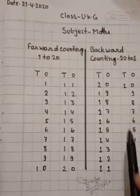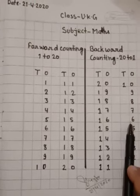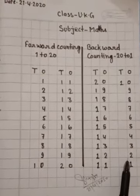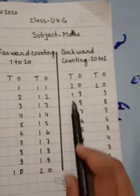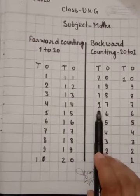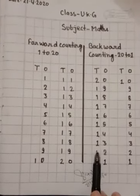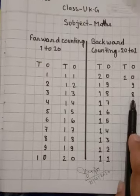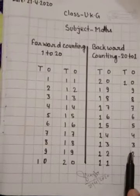Repeat once again. 10, 9, 8, 7, 6, 5, 4, 3, 2, 1. Now I will start it once again. 10, 9, 8, 7, 6, 5, 4, 3, 2, 1.